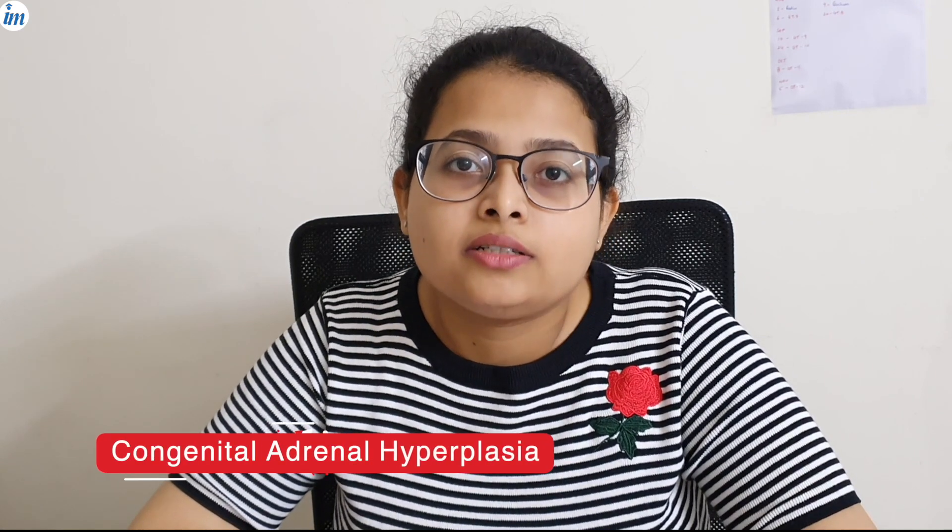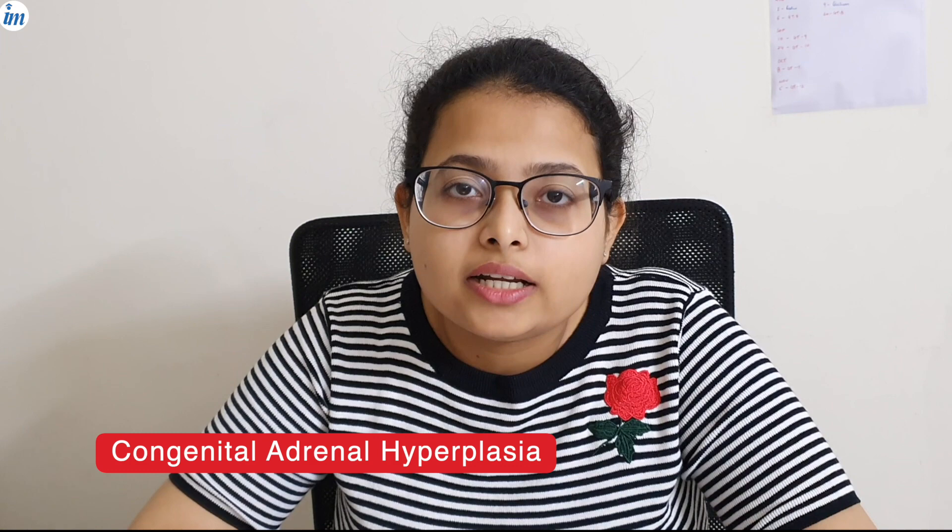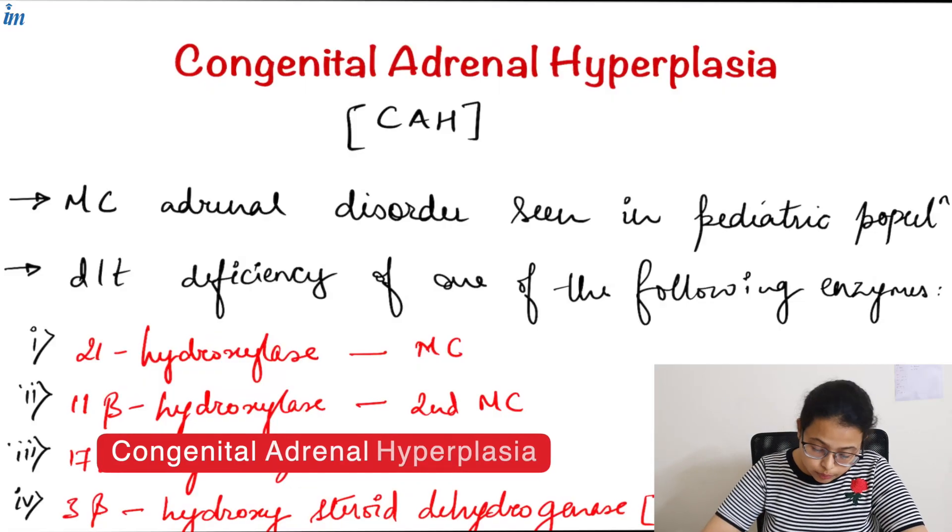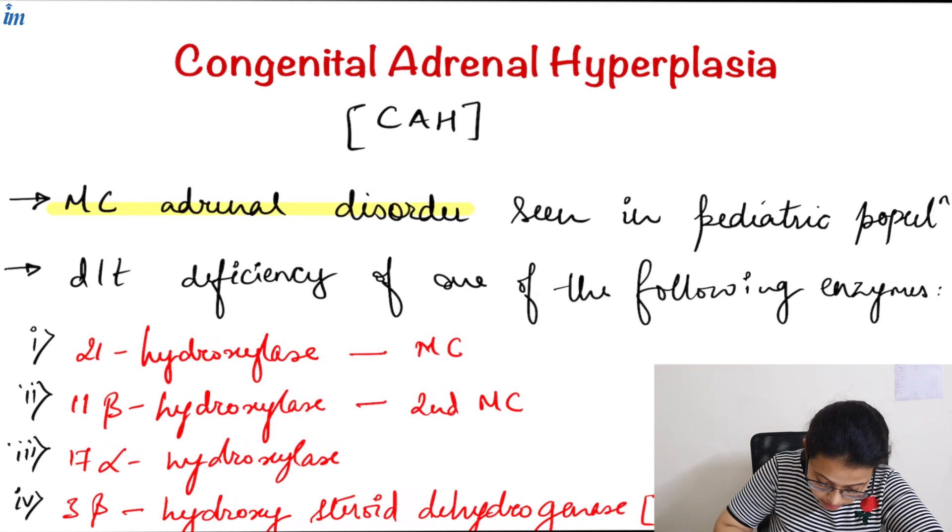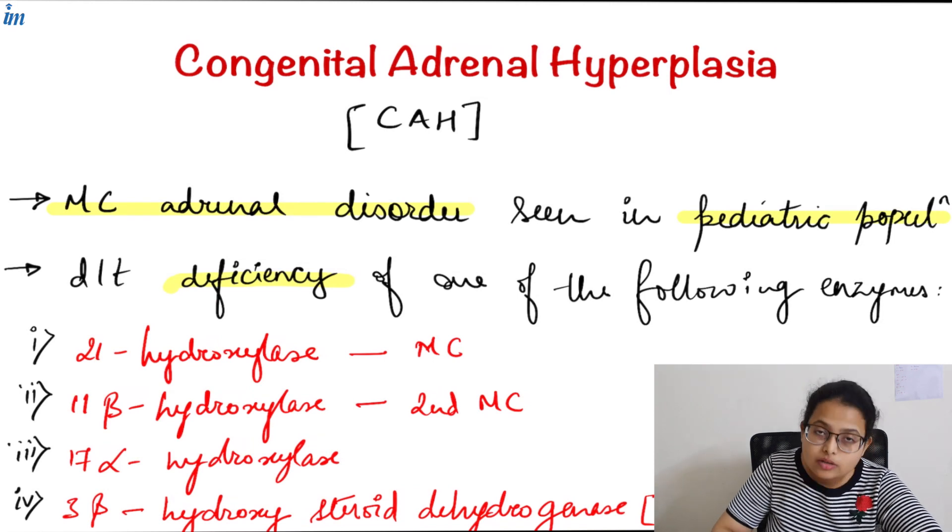Now, if you haven't checked that video yet, click on the hyperlink and watch it, as it will help you understand our next topic better—disorders of the adrenal gland. First, we're going to see congenital adrenal hyperplasia. This is the most common adrenal disorder seen in the pediatric population, caused by deficiency of one of the following enzymes involved in the synthesis of cortisol and aldosterone.